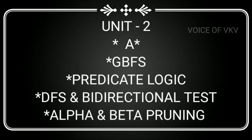In the second unit, there are five important topics: A-star, GBFS, Predicate Logic, DFS and Bi-directional Search, and Alpha-Beta Pruning or Cut-off. You can answer four questions from this unit.